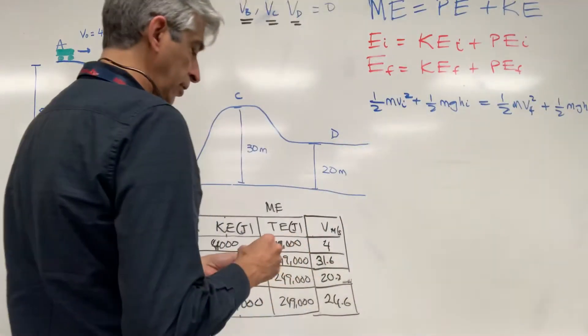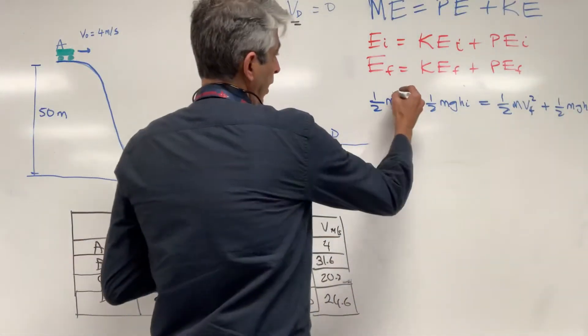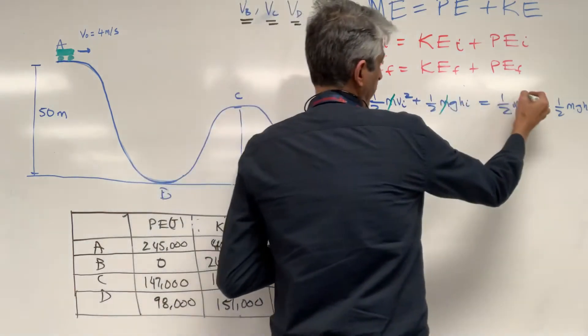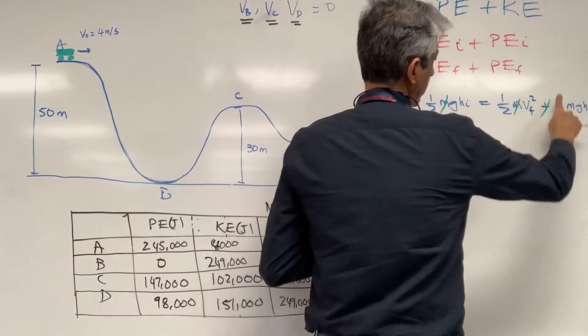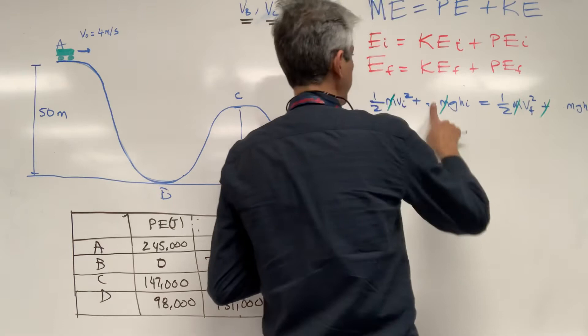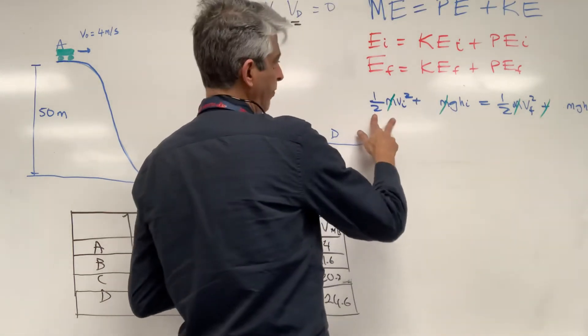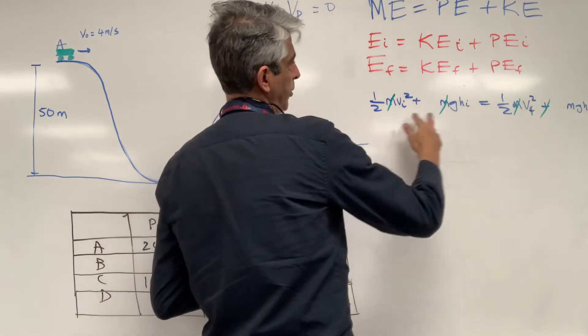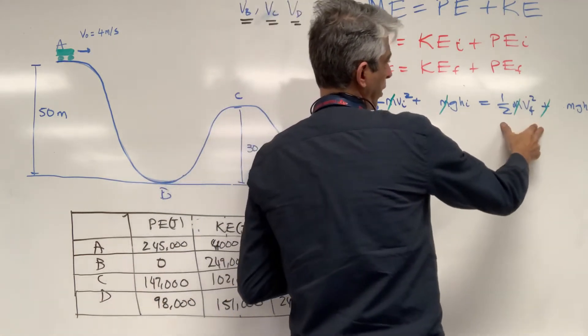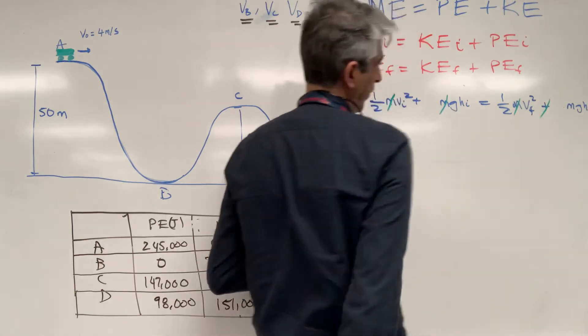But what's interesting to see is that I could just make mass cancel out of all these equations. So one-half mv squared, which is your kinetic energy plus your potential energy initial, and your kinetic energy final plus your potential energy final. So you can see that the m's cancel out of this equation.